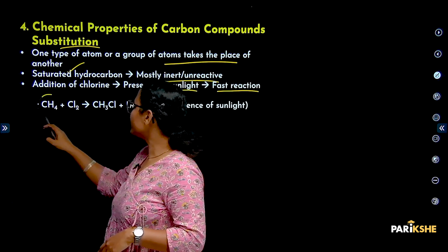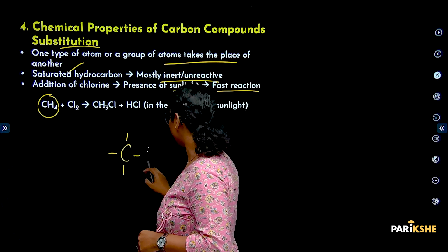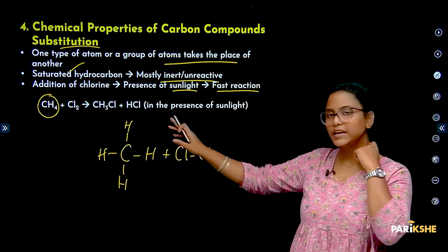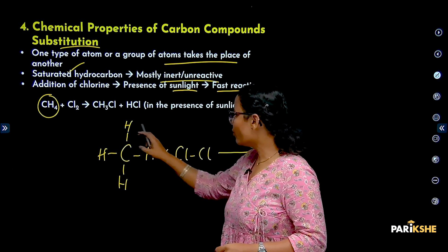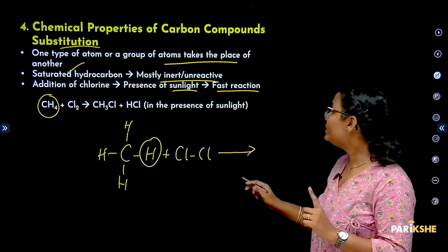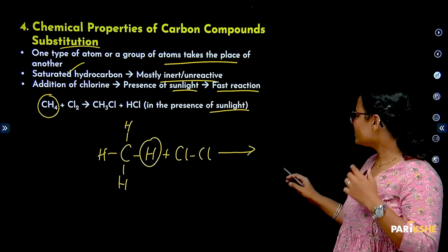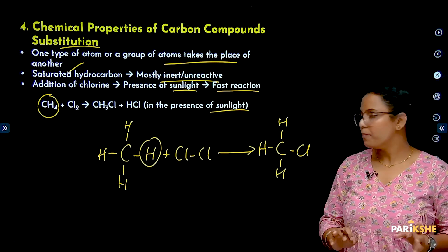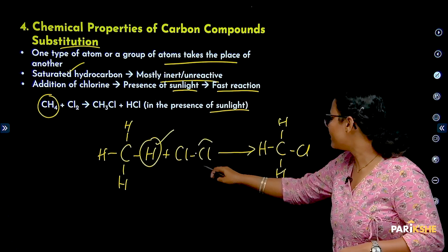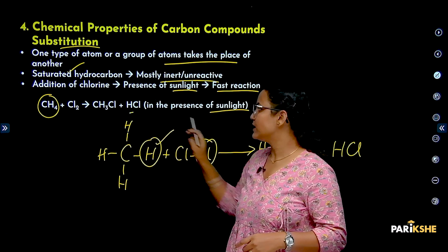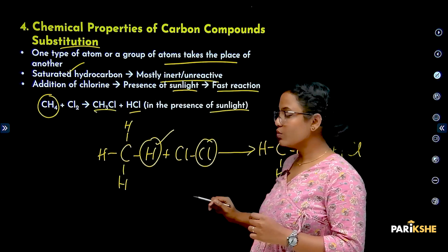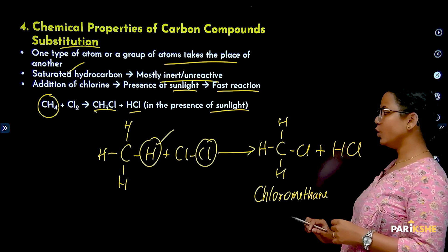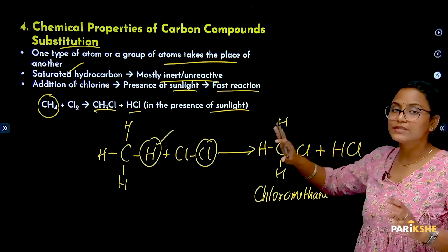This is how the reaction looks. Taking methane as an example — methane has four hydrogen atoms. When chlorine (Cl₂) is added in the presence of sunlight, one of the hydrogen atoms is replaced by chlorine. The removed hydrogen atom bonds with another chlorine atom to form HCl (hydrochloric acid). The resulting compound is known as chloromethane.